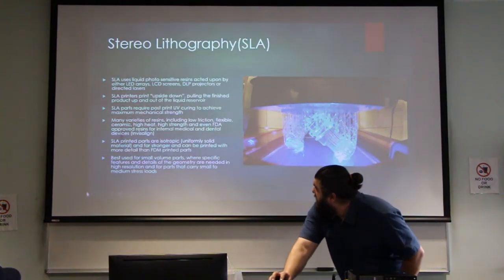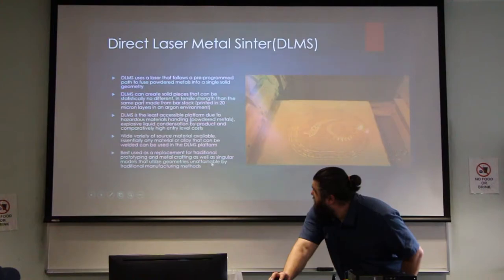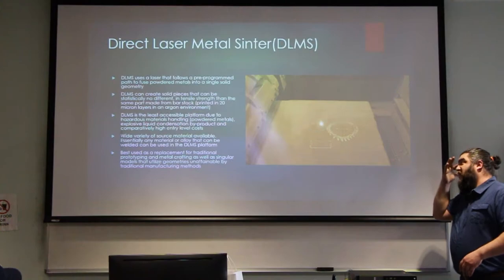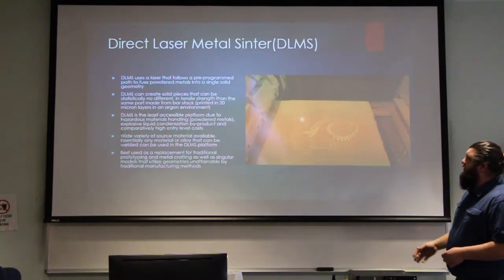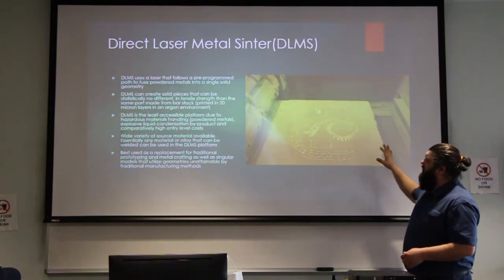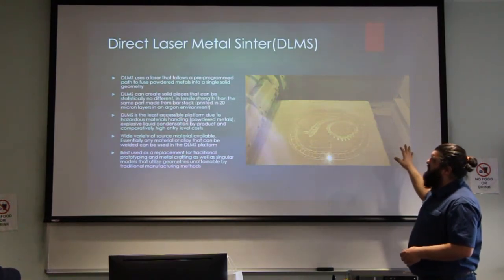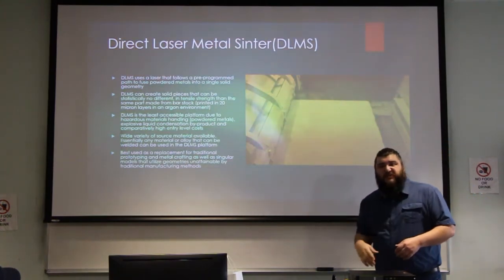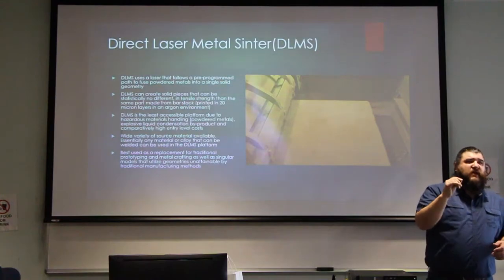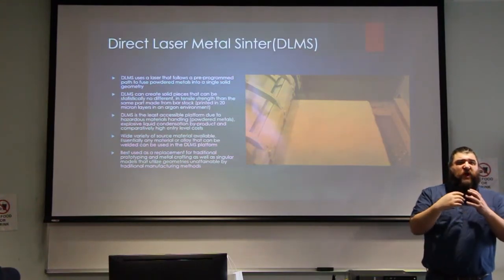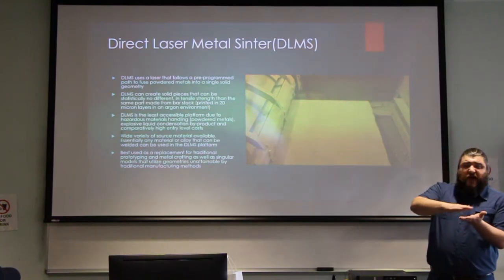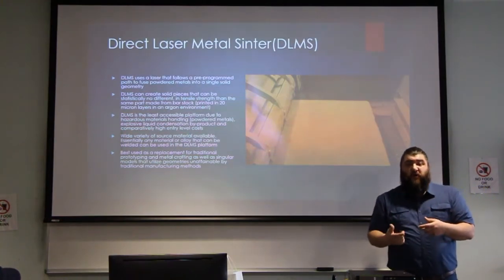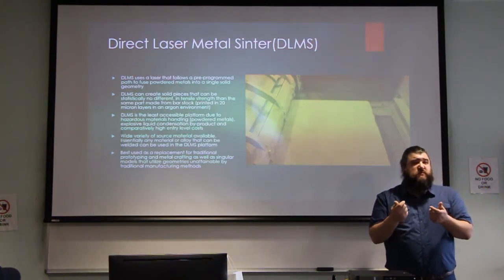Here at UDC we have the direct laser metal sintering machine. The arm lays a microns-thick layer of powdered metal, then the laser shines in a specific pattern. The area the laser hits fuses the metal together, essentially welding it into a solid piece. It builds by micron layers, and when the thing is done you shake the dust off and you have a fused metal piece.